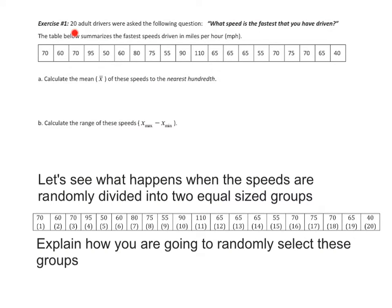Exercise 1. We have 20 adult drivers who are asked the following question: What speed is the fastest that you have ever driven? The table below summarizes the fastest speeds, so let's make sure this table is in our notes. Part A says calculate the mean of these speeds to the nearest hundredth. So I'm putting all of these in L1. You should be doing the same thing. If you're not doing it with us, you're going to have a hard time in class. Get all of these in L1, and then we'll run our one variable stats for L1. So I got a mean of 69.25, and of course that's in miles per hour.